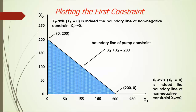The actual constraint x1 greater than or equal to 0 is given by all the points on or to the right of the x2 axis. Similarly, the constraint x2 greater than or equal to 0 is given by all points on or above the x1 axis. That is why we focus on the first quadrant. Simply put, anything outside the first quadrant will be infeasible because it will violate either x1 ≥ 0 or x2 ≥ 0, or both.